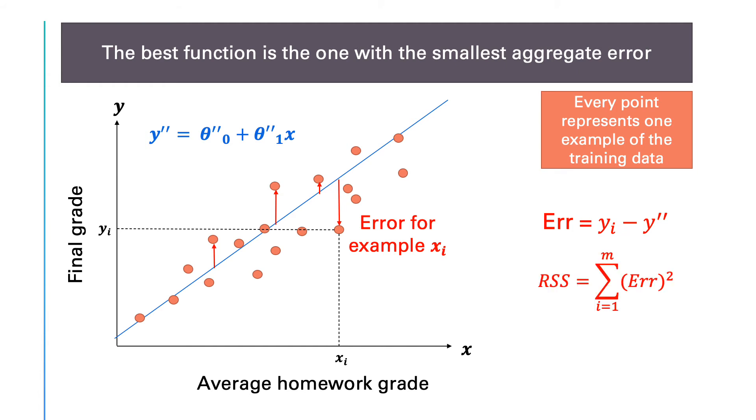This error measurement is widely used in regression problems and is known as the residual sum of squares or RSS. There are other error indicators that could be used.